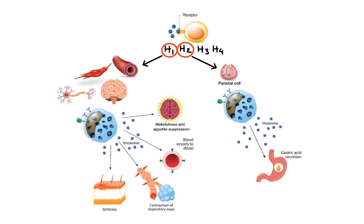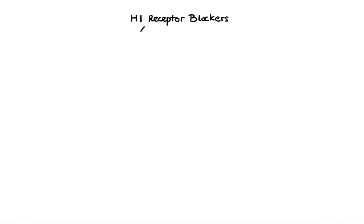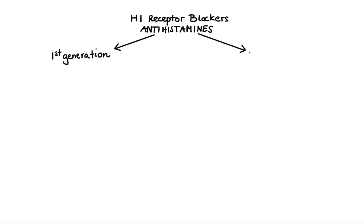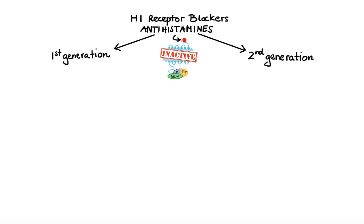Now let's talk about drugs that block the action of histamine, starting with H1 receptor blockers, classically referred to as antihistamines. The H1 receptor blockers can be divided into the older, or first generation agents, and the newer, or second generation agents. These agents act as inverse agonists, meaning they bind to the H1 receptor on a target tissue and stabilize its inactive conformation, leading to inhibition of histaminic actions and gradual relief of allergy-related symptoms such as inflammation, itching, runny nose, and sneezing.